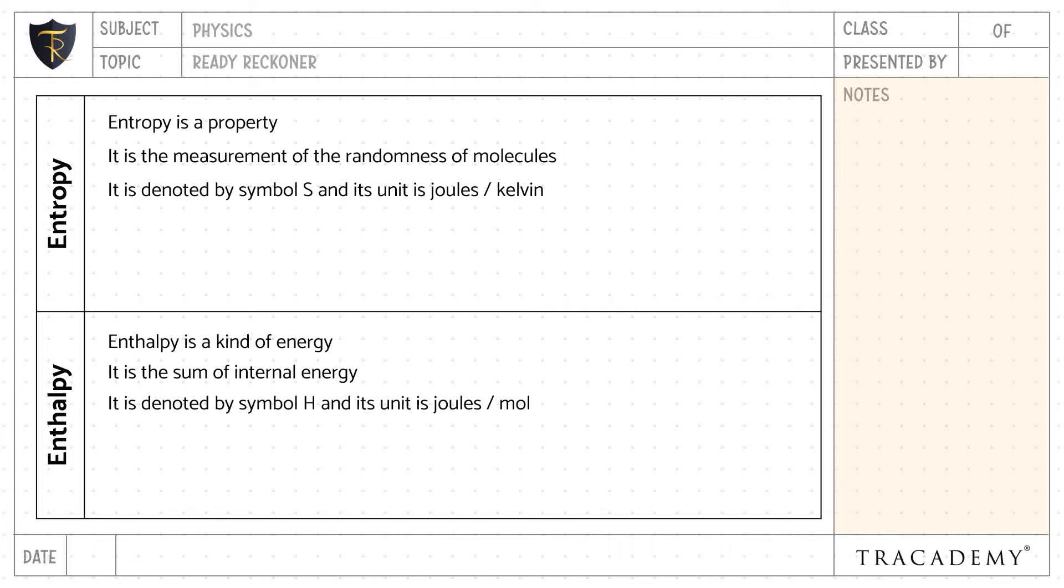Enthalpy is denoted by the symbol H and its unit is joules per mole.